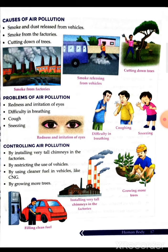We can control air pollution by installing tall chimneys in factories, restricting the use of vehicles, using cleaner fuels in vehicles like CNG, and by growing more trees. Growing trees is very important — everyone should plant a few trees every year so that after 10, 15, or 20 years those trees will grow large and give us lots of oxygen. We must not cut large grown-up trees; instead we should plant more so that future generations do not face the air pollution problems we face today.